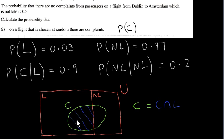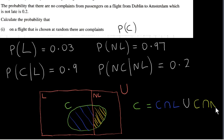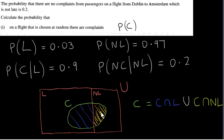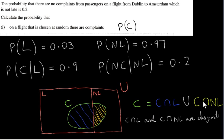Points in the blue region belong to both C and L. This yellow region is the intersection of C and NL — if there's a point in here, it represents a flight for which there were complaints and a flight that was not late. C intersecting L, the blue region, and C intersecting NL, the yellow region, are disjoint sets. If we take the intersection of these two sets, we get the null set.